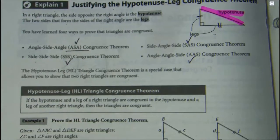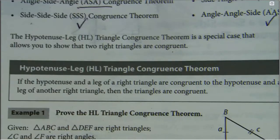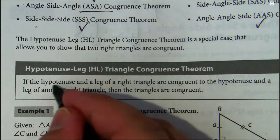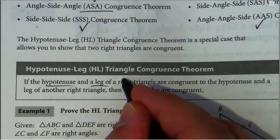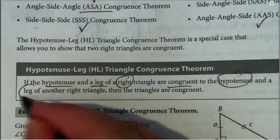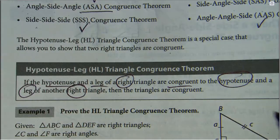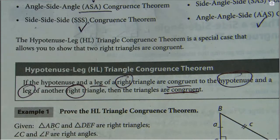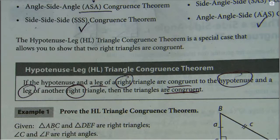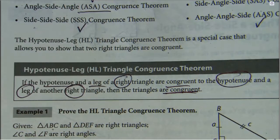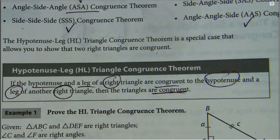So as it says, if a hypotenuse and a leg of a right triangle are congruent to the hypotenuse and another leg of another right triangle, these two triangles are congruent. Does that make sense? Any questions before I move on?